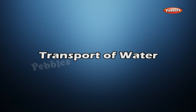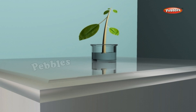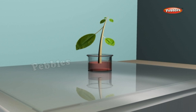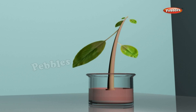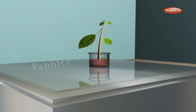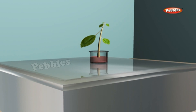To observe water transport, cut a balsam plant at the base and place it in a beaker half filled with water. Put a few drops of red fountain pen ink in the water and stir. Let the plant stay in the beaker for a day, then examine it the next day. You will observe thin red lines in the stem and leaves, and if the plant has white-petaled flowers, thin red lines will appear on the petals too. This experiment shows that thin tubes present in the stem transport water to all parts of the shoot system.